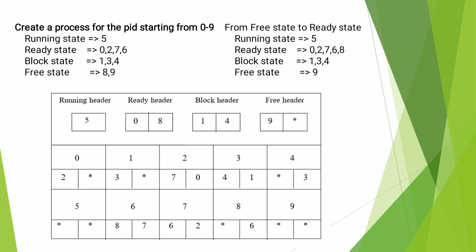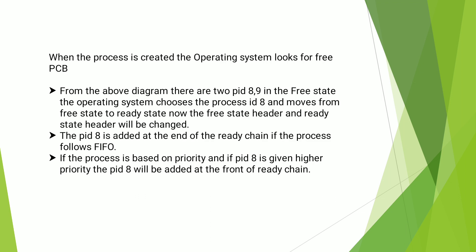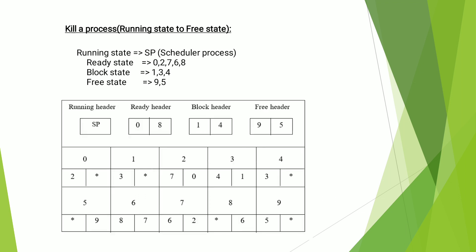The next one is called the Kill Process. Kill Process means the process which is in the running state can be terminated. So running state process five will be terminated, meaning it should be moved on to the free state. Now the running state is waiting for some other process, so it should go through the scheduler process. In the Process Control Block, the same allocation procedure will be followed.